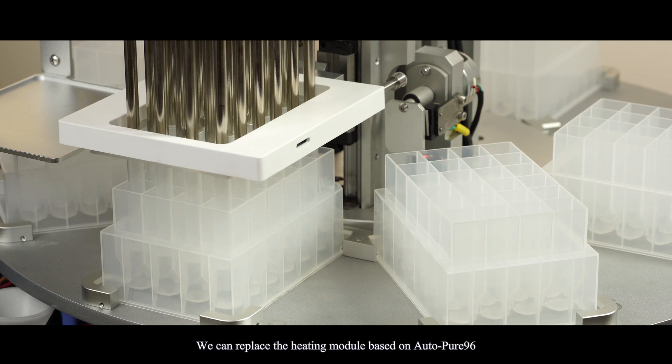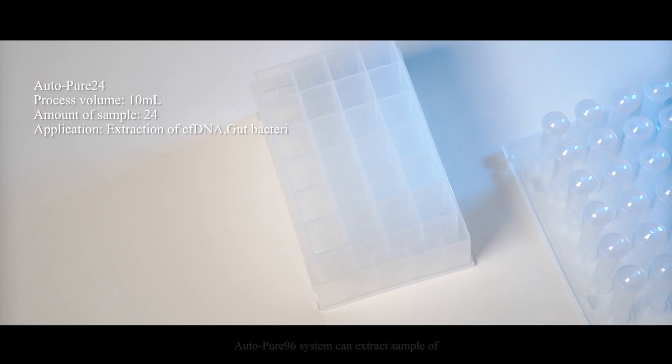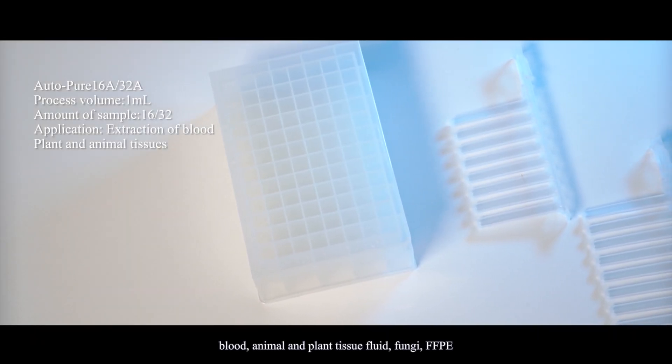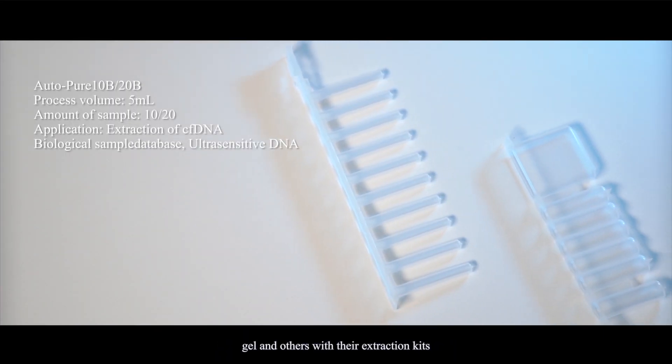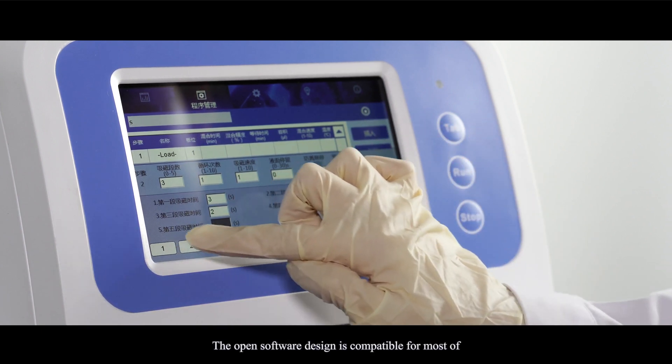Auto Pure 96 system can extract samples of blood, animal and plant tissue, fluid, fungi, FFPE, gel, and others with your extraction kits. The open software design is compatible for most of the magnetic bead extraction kits in the market.